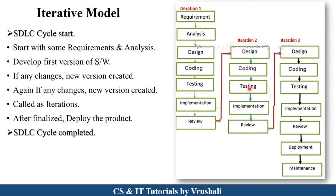They again perform design, coding, and testing, and again review the complete implementation. They check if there are any new iterations or new versions. If available, they again move to the next iteration, performing design, coding, and testing once more. If there are no new changes or versions, then they deploy the product to the customer and maintain that particular product. This is called the iterative model.